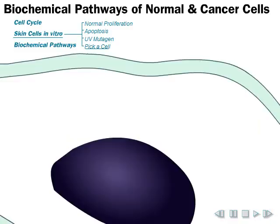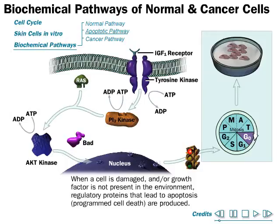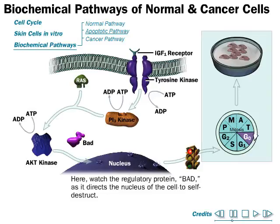Now let's talk about the apoptotic cell — the cell undergoing programmed cell death. When a cell is damaged and growth factor is not present in the environment, regulatory proteins that lead to apoptosis are formed. Apoptosis is also called programmed cell death.